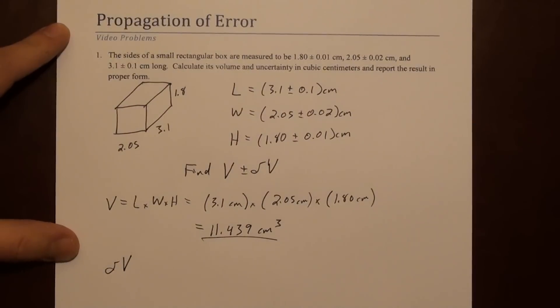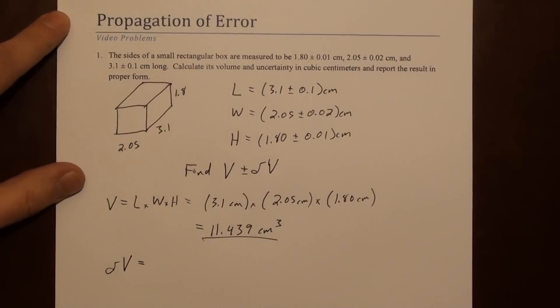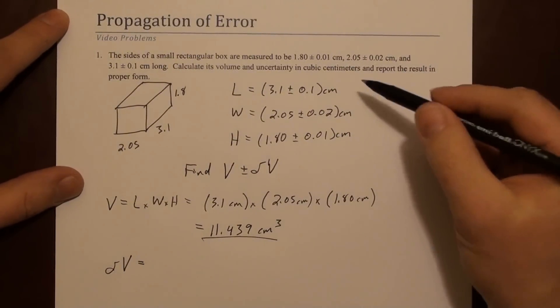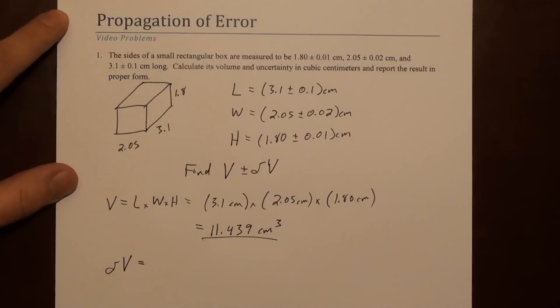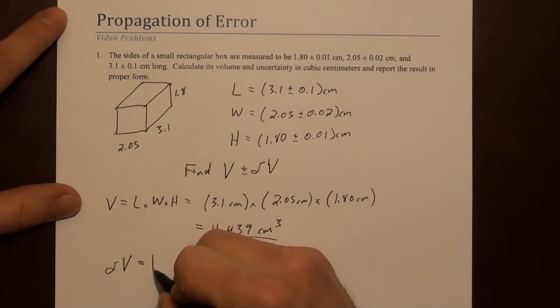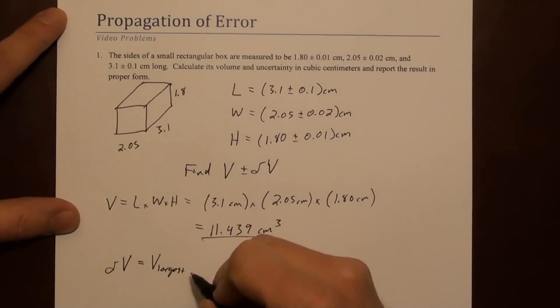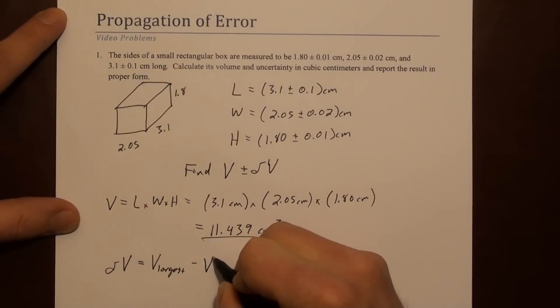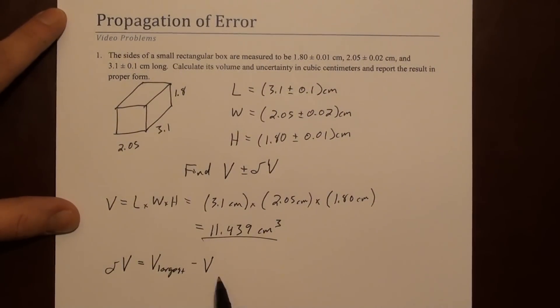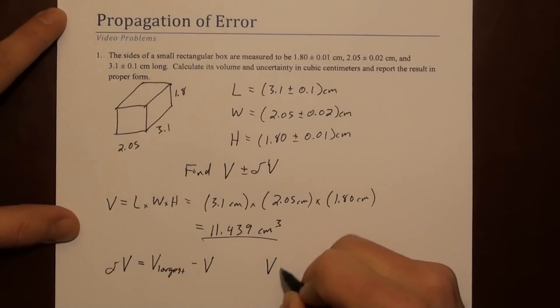The error in the volume. The procedure we've used is to assume that the errors in the length and the width and the height conspire to give us the largest wrong answer. So we call that V_largest. And once we have V_largest, if we subtract the actual V, that difference is a reasonable estimate of this error. So let's find V_largest.